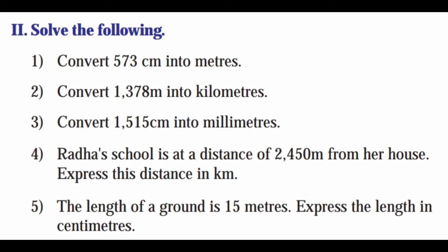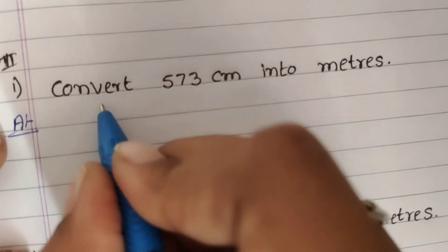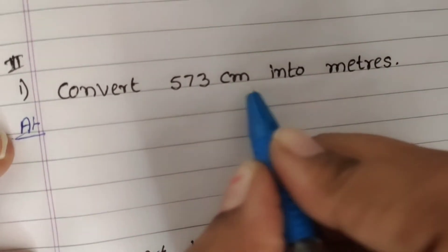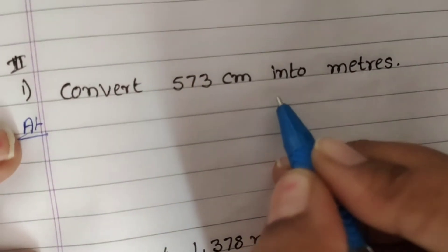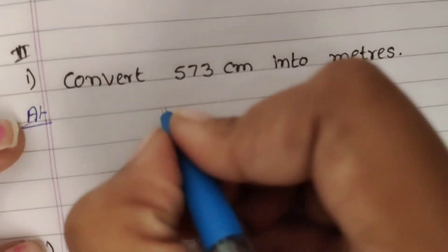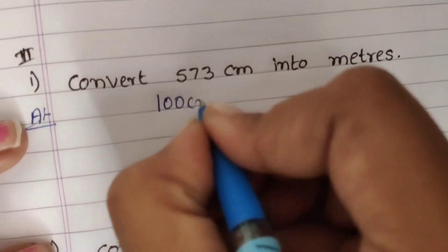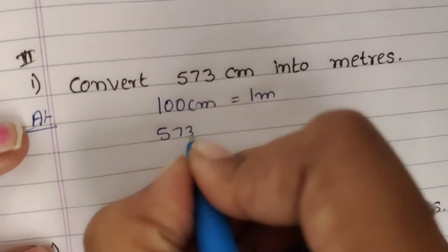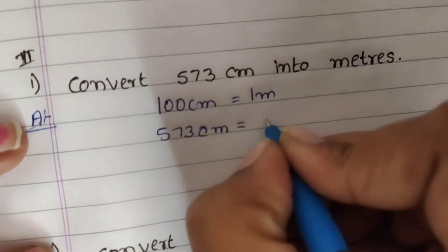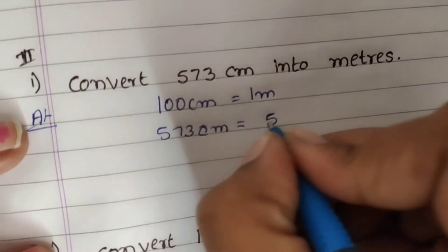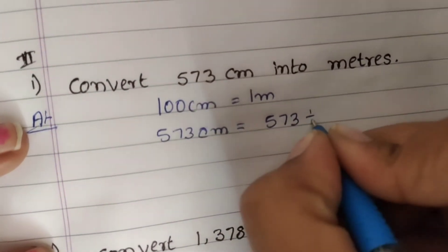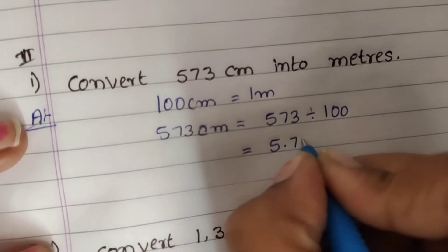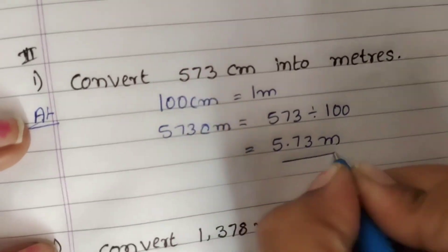Solve the following. Question 1: Convert 573 centimeters into meters. Since 100 centimeters equals 1 meter, 573 divided by 100 equals 5.73 meters.